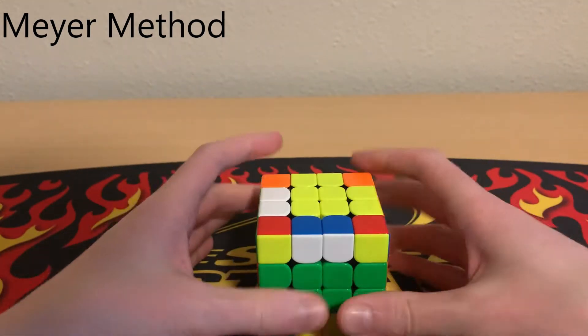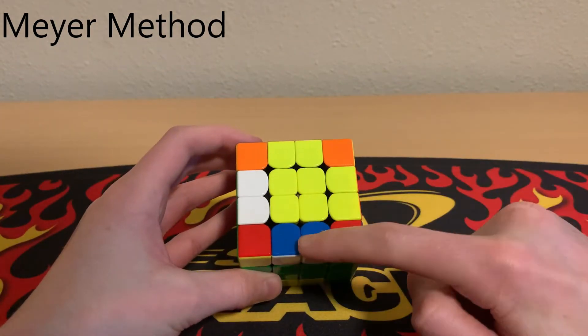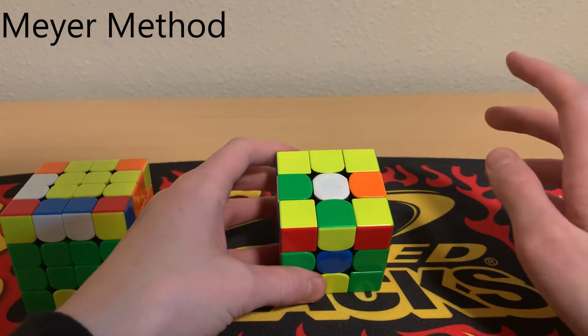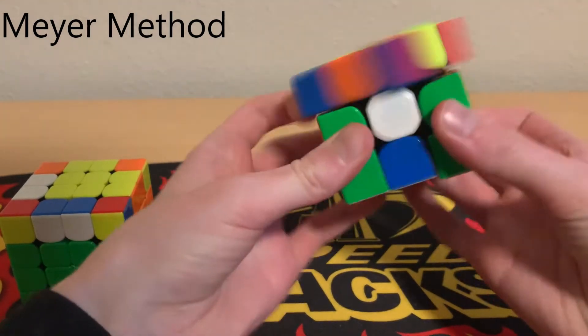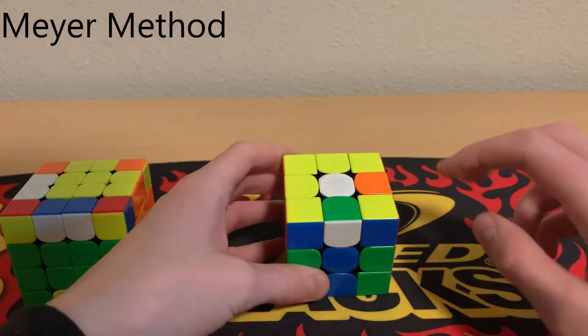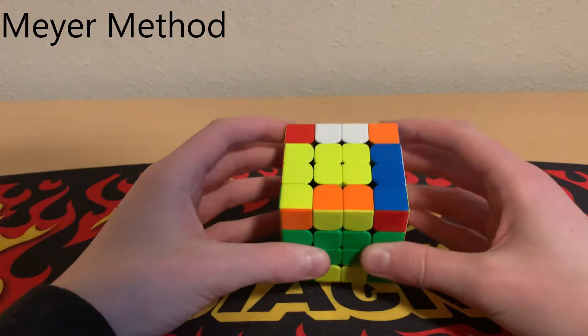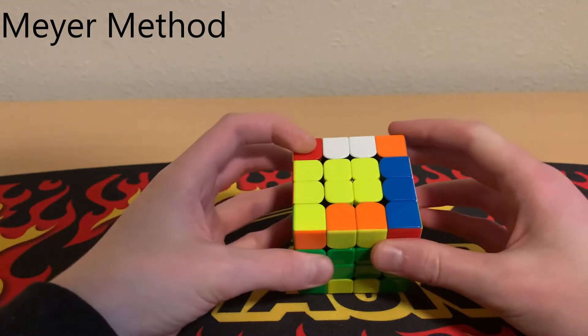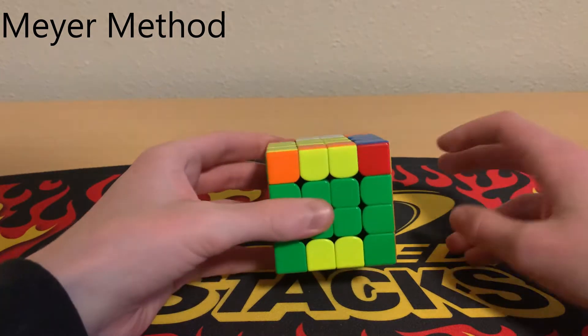Once you've built second block, do not do CMLL. Instead we're going to count the number of bad edges. On 3x3 we always have an even number of bad edges—zero, two, four, or six. If you have an odd number of bad edges, so one, two, three—we have three bad edges, that's not good. We always need an even number. Then you have to do parity.